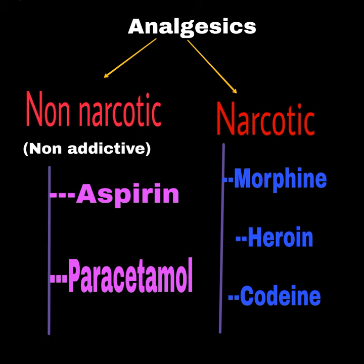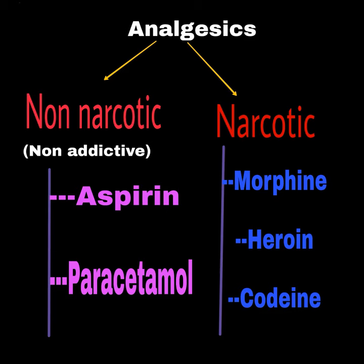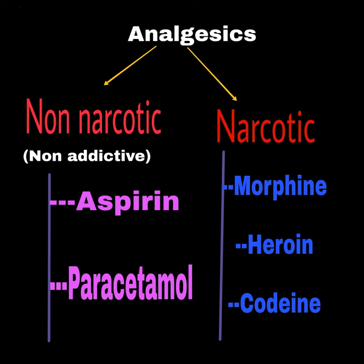Analgesics are divided into two parts: one is non-narcotic and the other is narcotic. Non-narcotic simply means non-addictive and narcotic is addictive. They are divided on the basis of their addictive properties. Non-narcotic examples are very simple — two examples given in NCERT: aspirin and paracetamol.